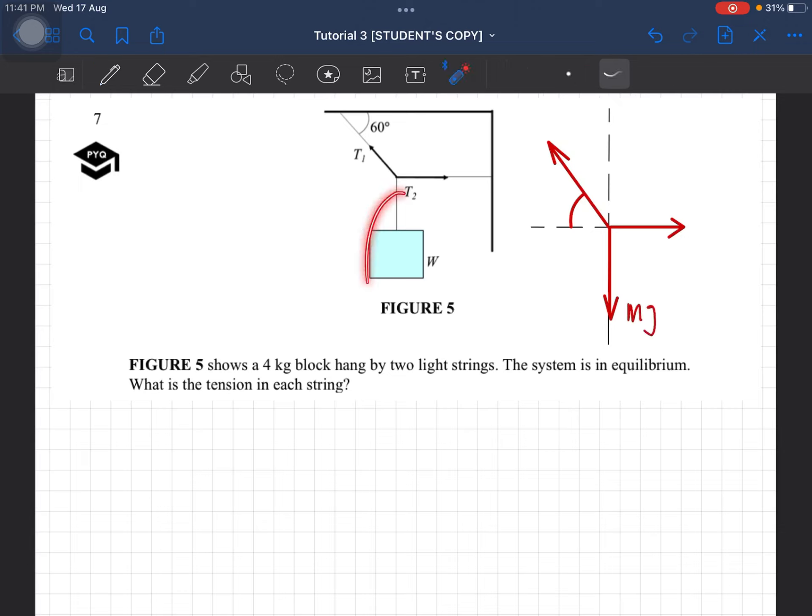It's given here. They're talking about W, T2, T1. So this is 60 degree. This is T1. This is T2.